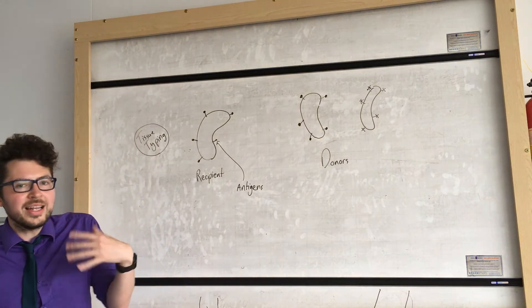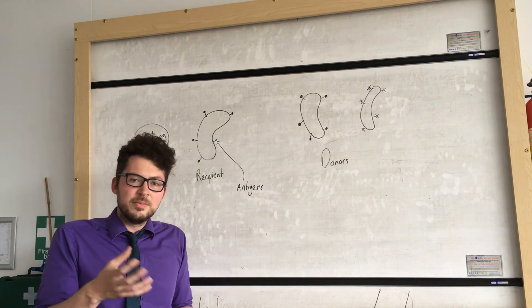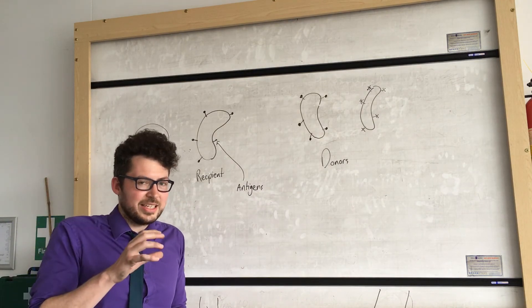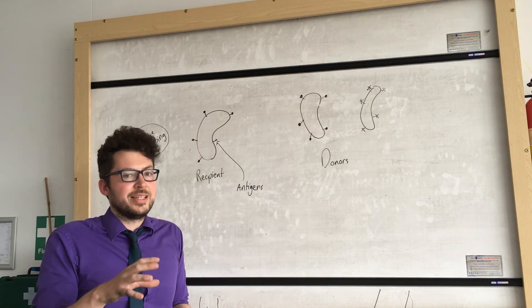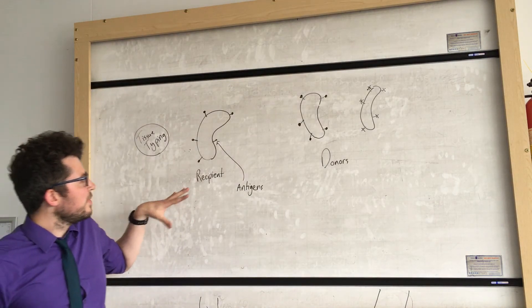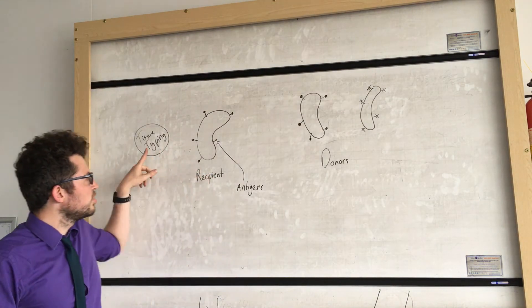If we have the wrong antigens our body's immune system, white blood cells, are going to attack that and try to destroy it. Which is not what we want. So what we have to do, we have to make sure you do a process called tissue typing.